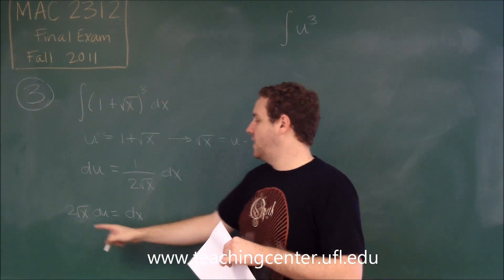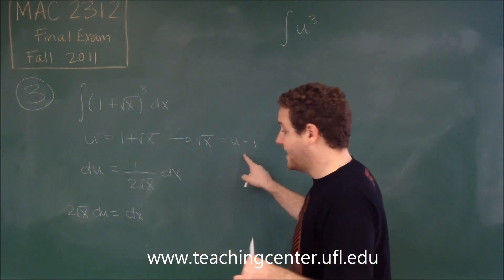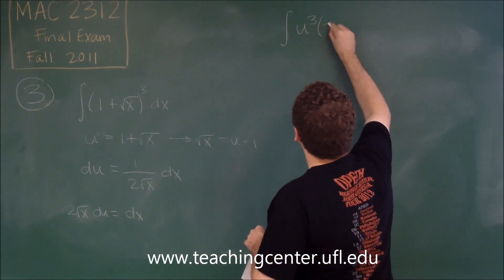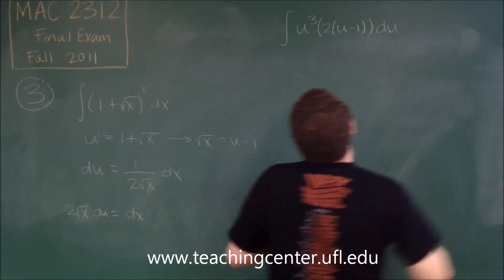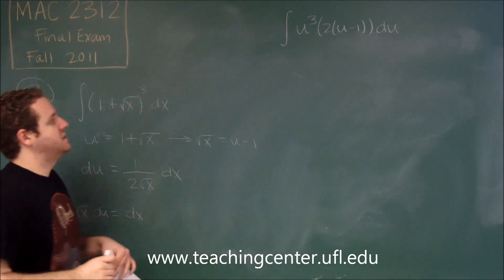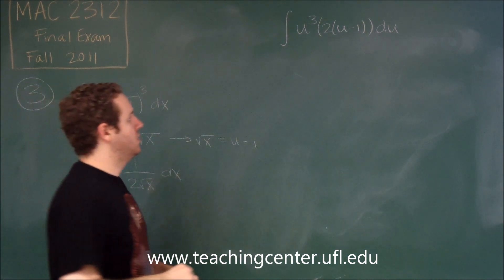Instead of dx, we get two root of x du, but root of x is u minus one, so we get two times u minus one du. You can see now that's all in terms of u, and that's a pretty simple integral.